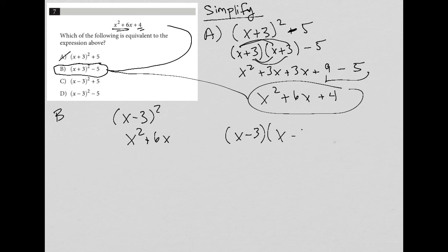We have x minus 3, x minus 3. We FOIL that. We get x squared and then minus 3x and minus 3x. And then we have our plus 9, which means we're going to have x squared minus 6x plus 9.